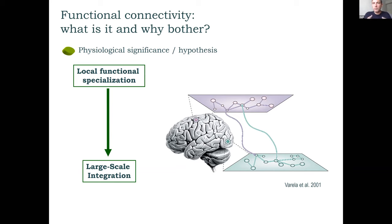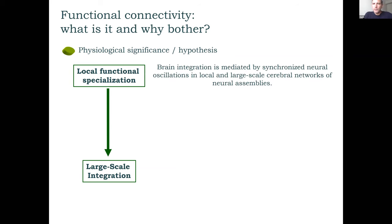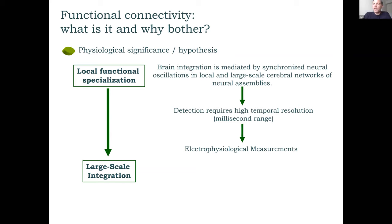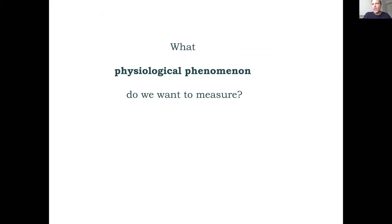There are many proposed mechanisms behind this, and we need specific metrics to tap into them. Since these interactions happen at millisecond timescales, ideally we want techniques with millisecond resolution — which is why EEG, MEG, and intracranial EEG are ideal. The phenomenon we want to measure is neuronal synchronization: synchronization between populations in distant brain areas.